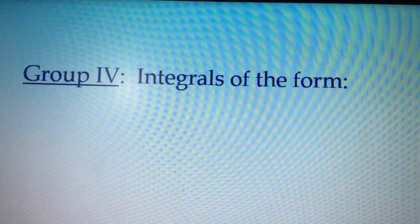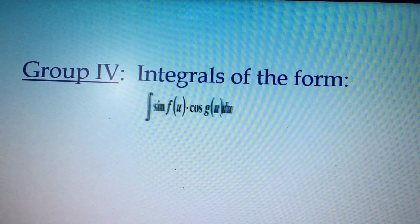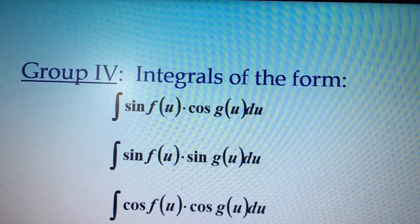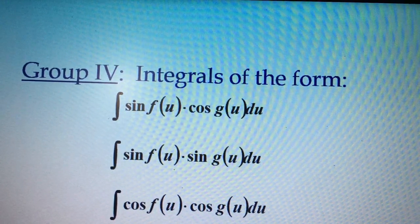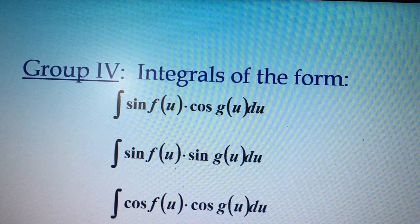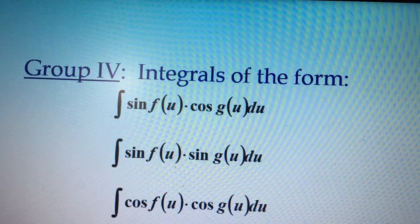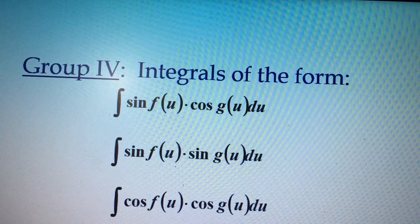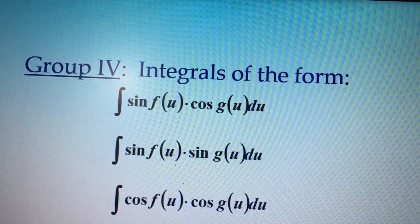Today we are going to discuss Group 4. Group 4 are integrals of the form — a product of sine and cosine where sine is a function of u and cosine is also a function of u. Another form is the product of two sine factors, and for the third one, both factors are cosine.